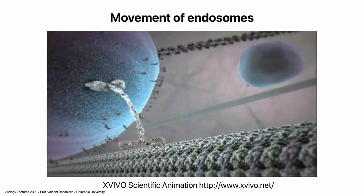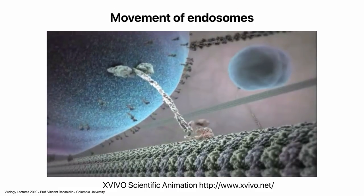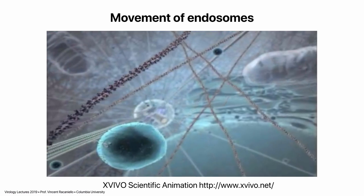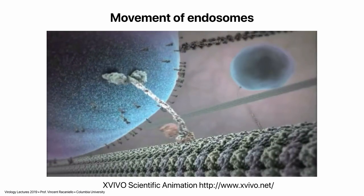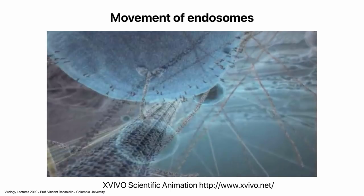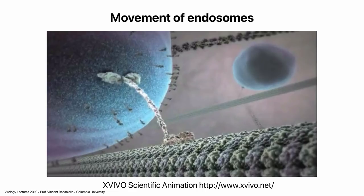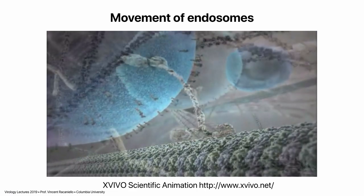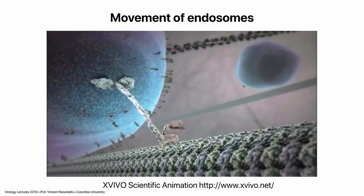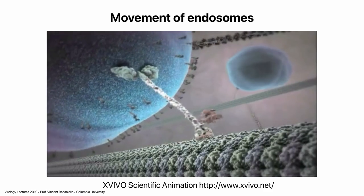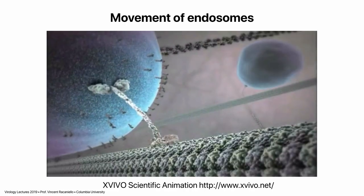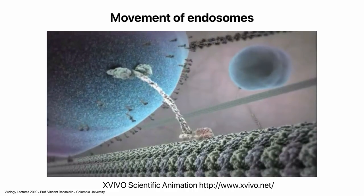Now we have an animation of a dynein motor riding on a microtubule pulling an endosomal vesicle. The cytoplasm is not as crowded as the artist depicted, but the point is that if these are virus-containing vesicles, they're being brought into the cell on this normal endocytic pathway. These are microtubules stretching from the plasma membrane down near the nucleus, and these motor proteins are walking along them, breaking down ATP. A virus infection would take weeks if it depended on diffusion.